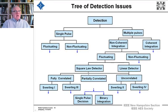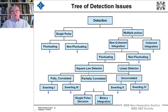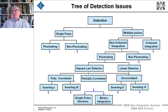Then comes the issue of whether the data — the multiple pulses — are fully correlated, partially correlated, or uncorrelated and independent from one another. They're fully correlated as in a steady target where all pulses are correlated. Targets can fluctuate from pulse to pulse or from scan to scan, depending upon the physical actions going on with the target.